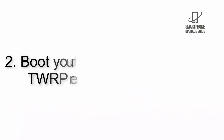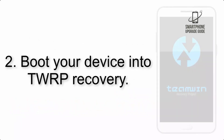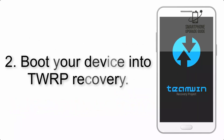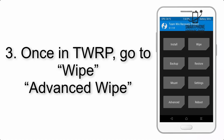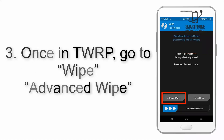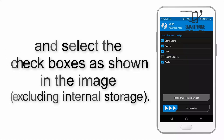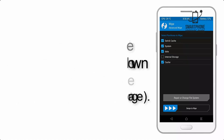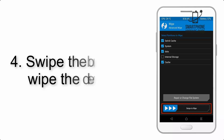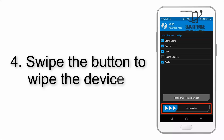Step 2: Boot your device into TWRP recovery. Once in TWRP, click on Wipe Advanced, and select the checkboxes as shown in the image, excluding internal storage. Step 4: Swipe the button to wipe the device.